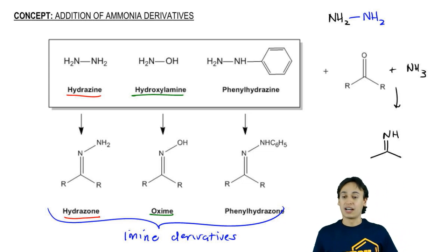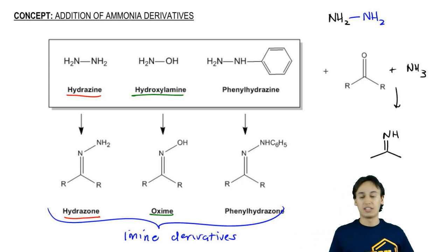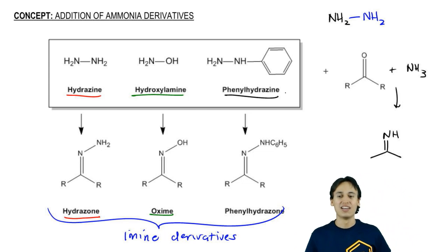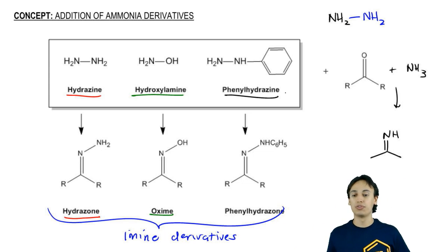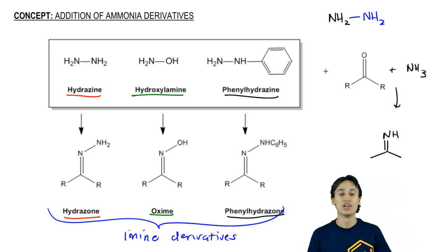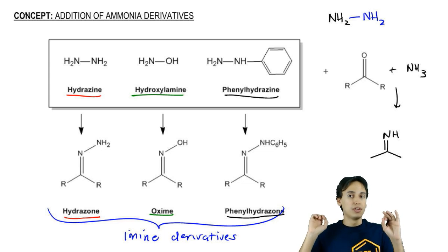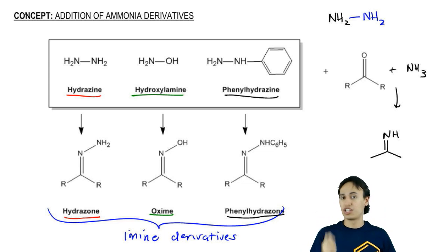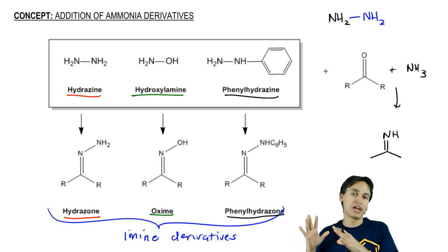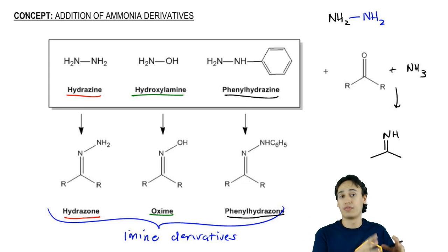Finally, if you were to take a hydrazine but put a phenol on it, that's a phenylhydrazine. Phenylhydrazine is going to yield phenylhydrazone when you react it with a ketone. These are all different combinations that all follow the exact same mechanism as an amine addition, except they're just derivatives of an amine that react to make a derivative of the amine as a product.